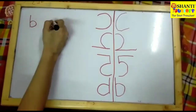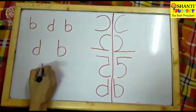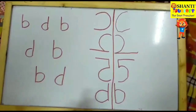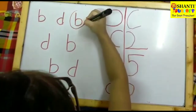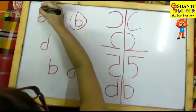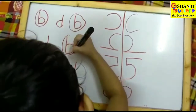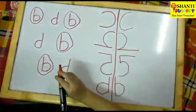Another activity is: you can give mixed letters to them and say now circle letter B. Wherever you see letter B, just circle it. So parents, you have seen these little activities. You can also do these with your children so the issue of mirror image writing will be solved.